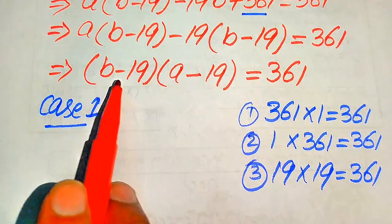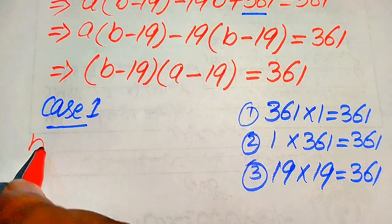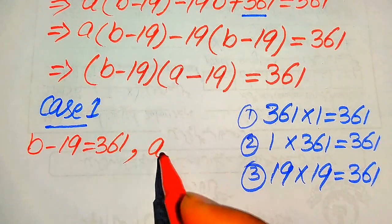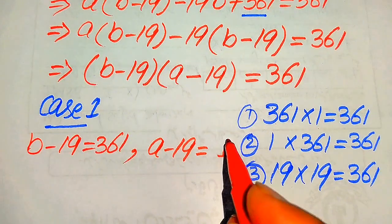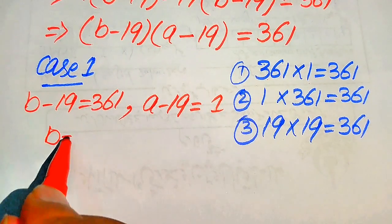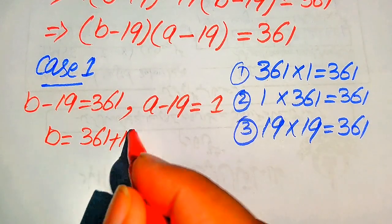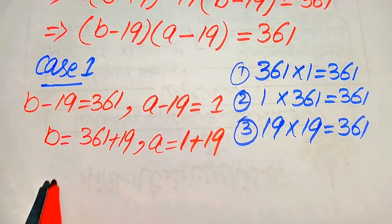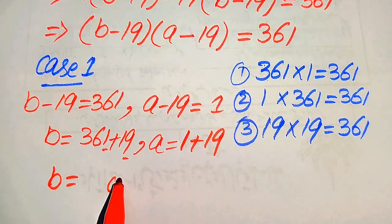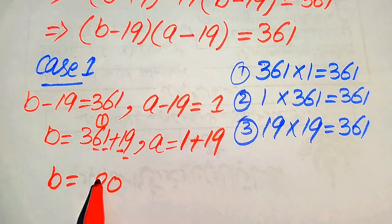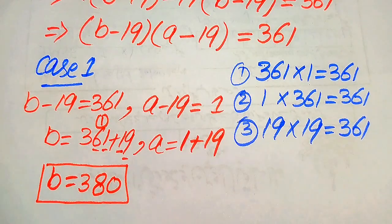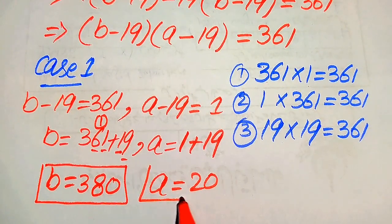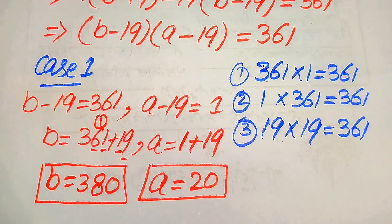In Case 1, we compare the two factors with the pair (361, 1): b minus 19 equals 361 and a minus 19 equals 1. From the first equation, b equals 361 plus 19 equals 380. From the second, a equals 1 plus 19 equals 20. So from Case 1, the values are a equals 20 and b equals 380.